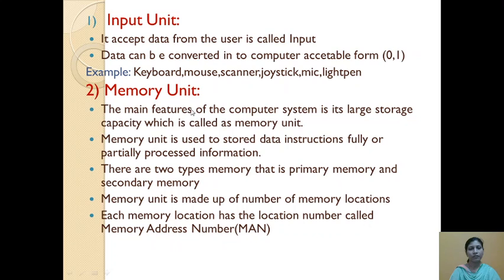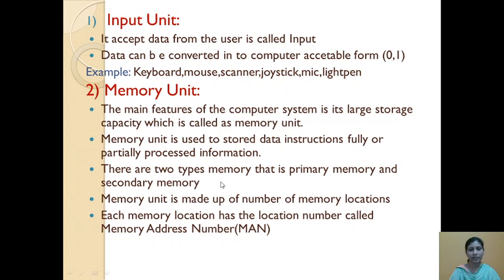The main feature of a computer system is its large storage capacity, which is the memory unit. The memory unit is used to store data, instructions, and partially processed information. We can store data temporarily or permanently. There are two types of memory: primary memory and secondary memory.